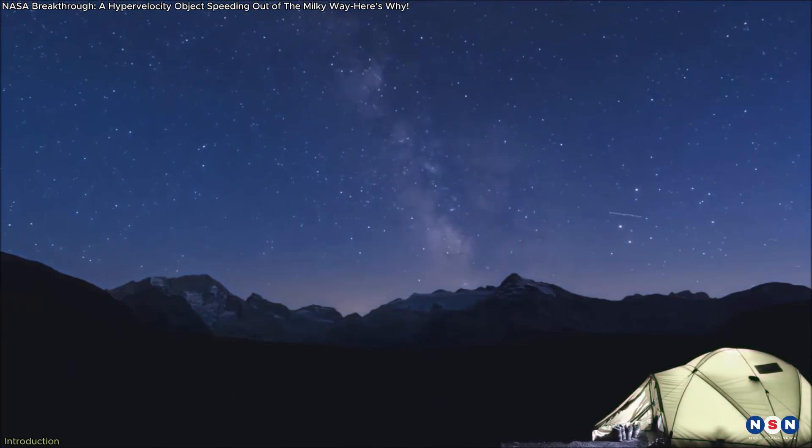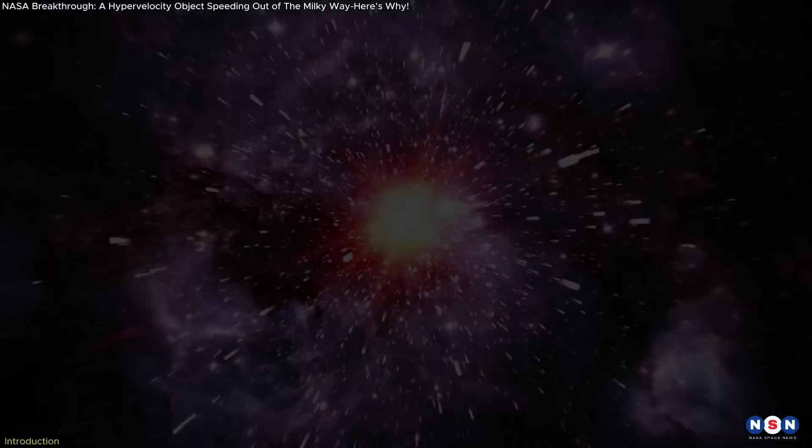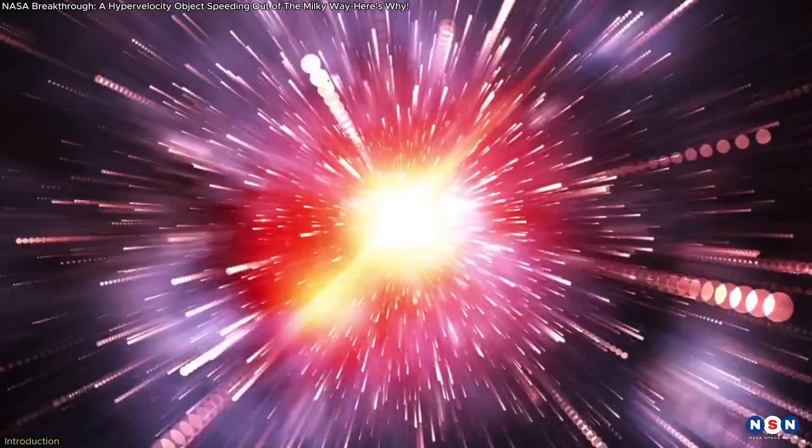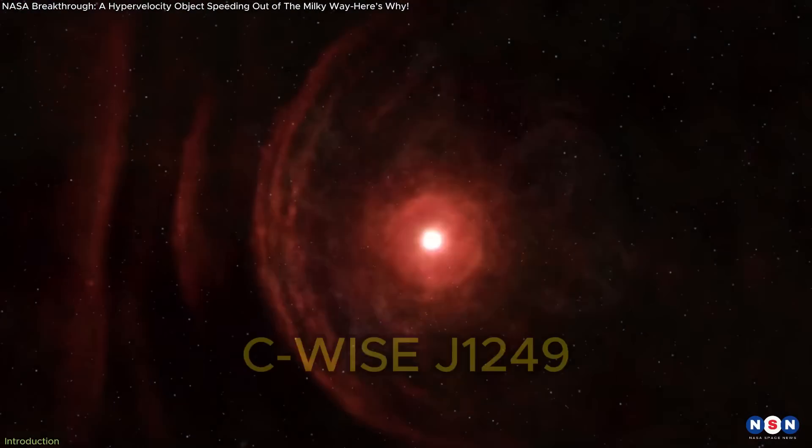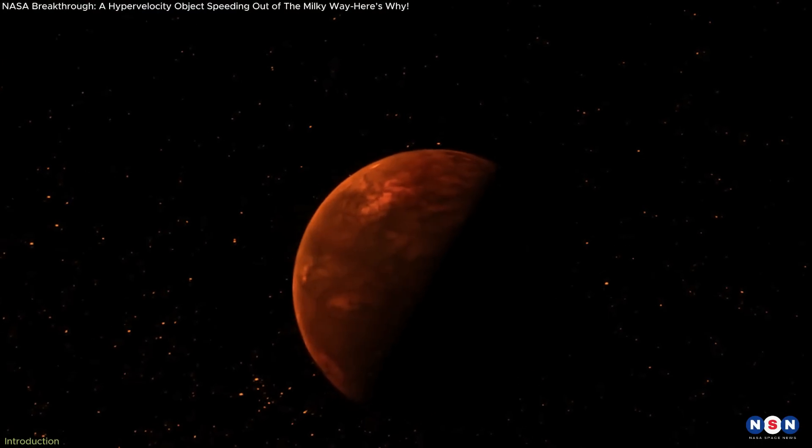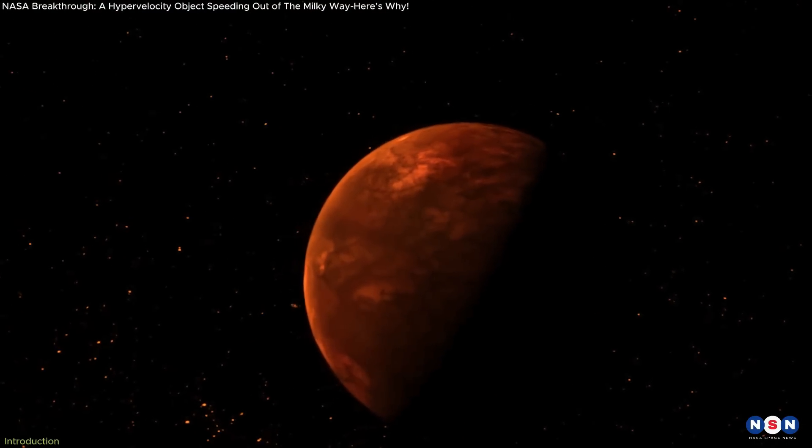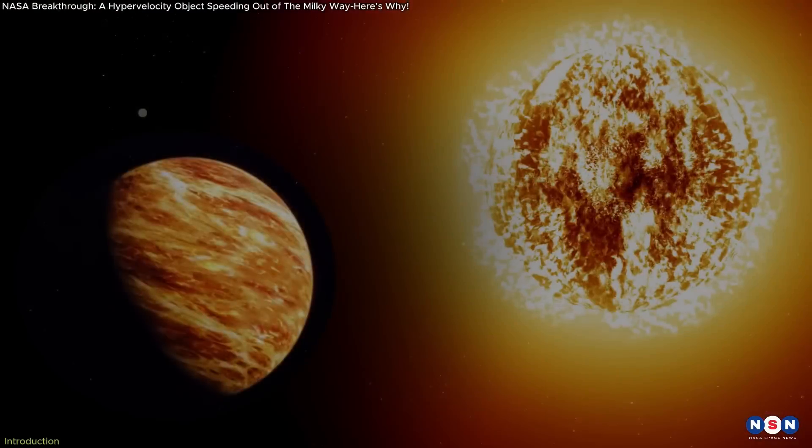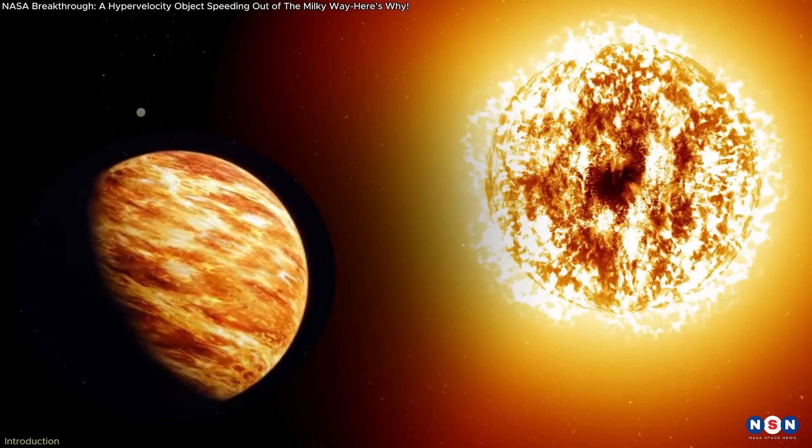NASA citizen scientists have recently discovered an object speeding through space at around 1 million miles per hour. Known as CWISE J1249, this faint and fast-moving body may be a low-mass star or brown dwarf, pushing the boundaries between a star and a gas giant.